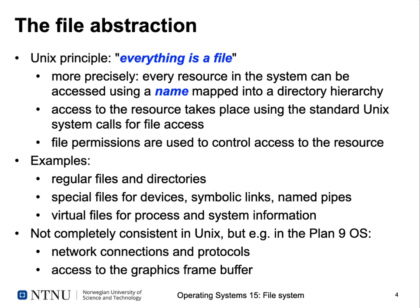Unix takes the view of having files as an abstraction beyond just managing disk drives and similar storage media. Unix actually takes this principle further and says everything in the system should be accessible as a file. This means every resource in the system can be accessed using a name mapped into a directory hierarchy, and when you try to access this name, these accesses behave as if you would access a regular file on a hard disk, even though you don't need any backing storage for certain types of file. Having access to any resource using the standard Unix system calls — open, read, write, and close — makes life easier for the programmer.